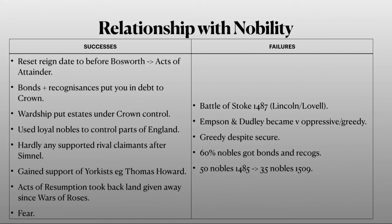Noble support for any opposition to Henry VII pretty much died out after Lambert Simnel. He managed to gain the support of some Yorkist nobles such as Thomas Howard, and he used acts of resumption to take back land that had been taken during the Wars of the Roses. Finally, there was an atmosphere of fear because Henry VII had nobles on such a strict financial leash that they had no choice but to support him.